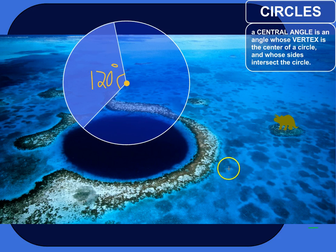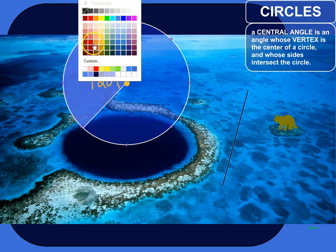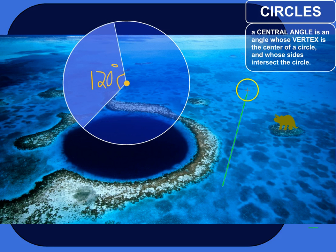So, an angle has a vertex, and that's where the two sides of the angle meet. So the vertex of this angle is right here. This here is not a central angle because the vertex is not the center of the circle.